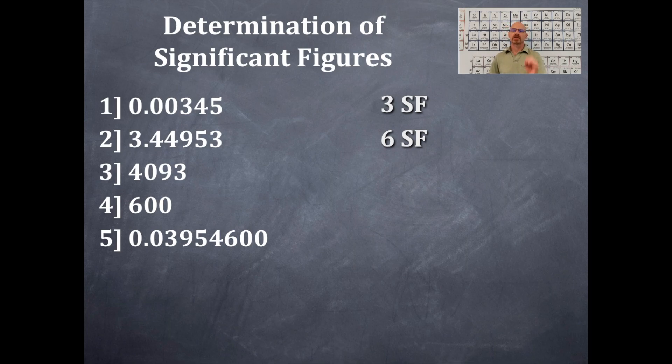Example number three. There's a 4, a 0, a 9, and a 3. The 4, 9, and 3 count because those are non-zero integers and non-zero integers always count. The 0 between the 4 and the 9, that is a captive 0. And the rules for zeros are that captive zeros count. So that has four significant figures.